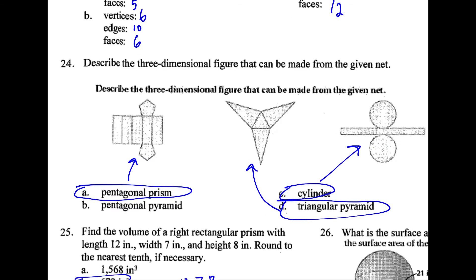For 24, the prisms have the same shape on the top and the bottom like these do. The pyramids will have a triangle on the bottom and they will all meet at one point on the top. And cylinders look like this. They have a circle plus a height.